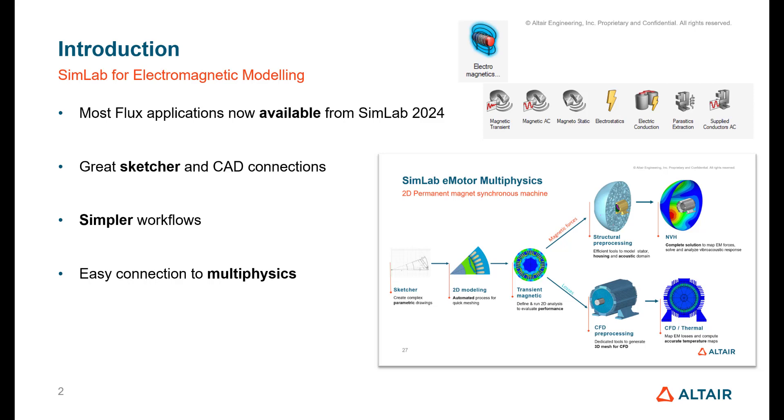You can see an example of e-motor multiphysics here with the 2D permanent magnet machine. We can go from the sketcher to the transient magnetic and then to NVH and eventually thermal.